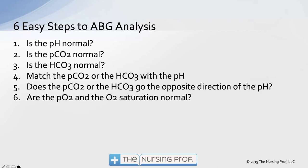Here are our six easy steps: Is the pH normal? Is the CO2 normal? Is the bicarb normal? With each step, we label it normal, acidotic, or alkalotic. Stay away from saying 'up and down' — saying the pH is high or low, CO2 is high or low. When talking like that, we get confused because not all of this goes the same way. A high CO2 creates a different problem than a high bicarb. That's why we want to talk in terms of acidotic and alkalotic.